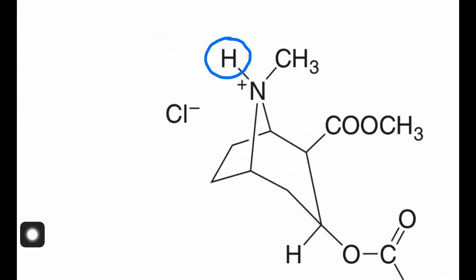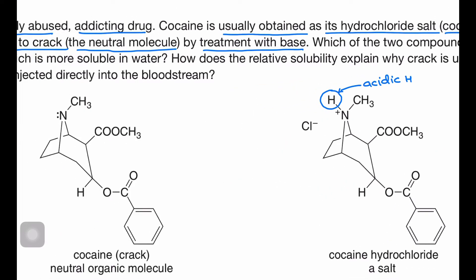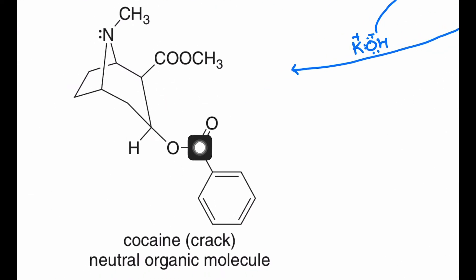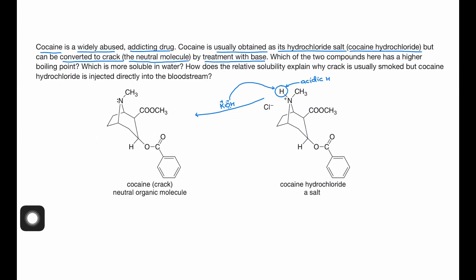In cocaine hydrochloride salt, this hydrogen is acidic. If you treat it with a base — suppose KOH — then the OH minus will take this H plus and form water, and you will get the neutral molecule that is cocaine crack.